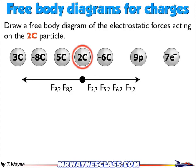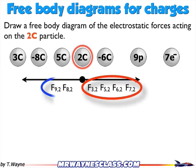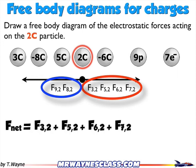Now I've got my free-body diagram and my forces. To create my equation, it's really simple: all the forces going to the right minus all the forces going to the left. I'll set up my net force equal to all the forces going to the right — see how they're all added up — minus each of the forces going to the left: minus F92 and minus F82. The next step is to put numbers associated with these letters, and that's where Coulomb's law comes in.